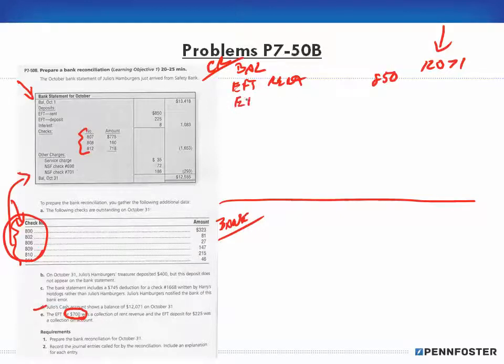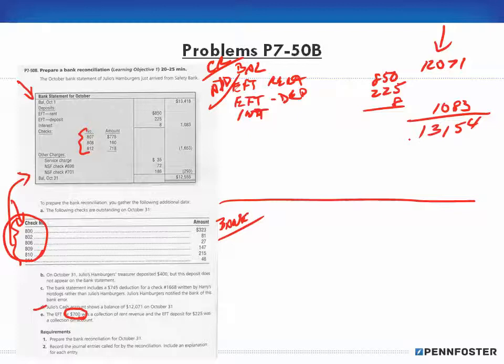For my balance, I have to add in the EFT for the rent of $850 and the EFT for the deposit of $225, and I have interest on the bank. Interest of $8, so that's $1,083 plus $415 gives me $13,154 as the subtotal.